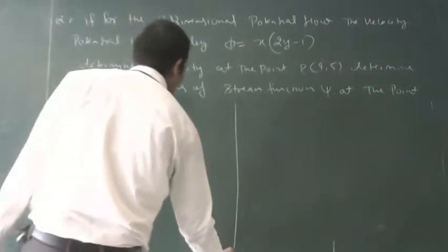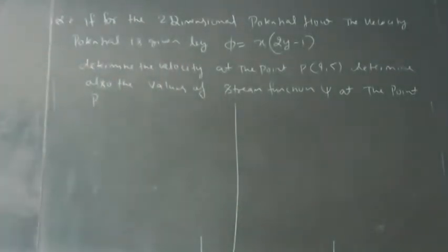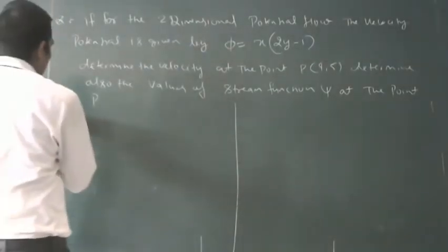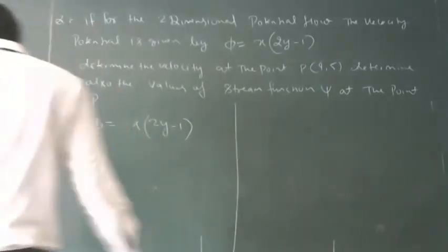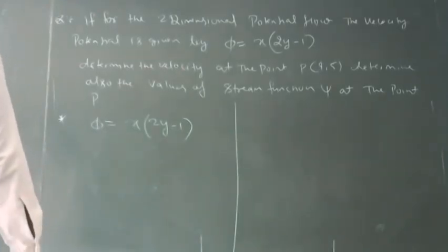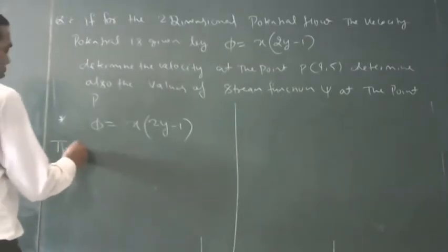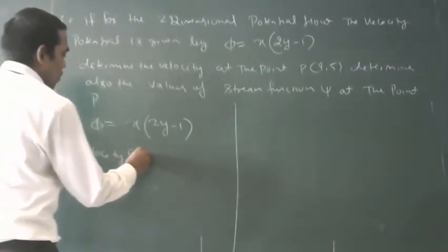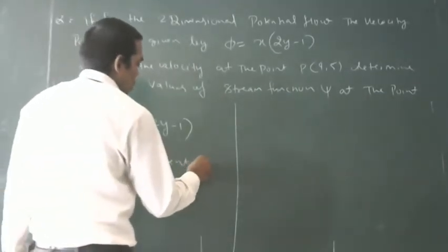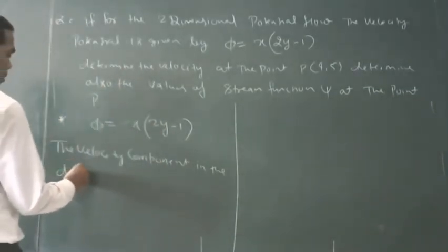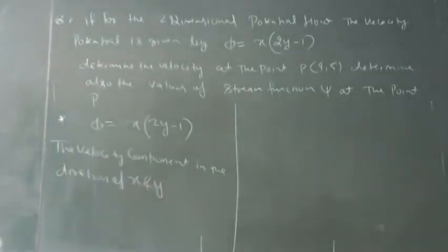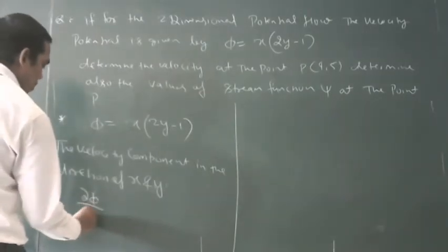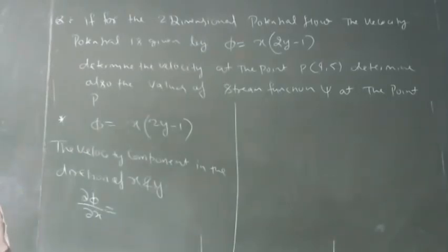Given φ = x(2y-1), the velocity component in the direction of x and y. The velocity components u and v in the x and y coordinate.